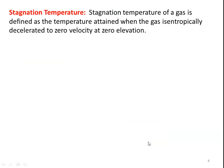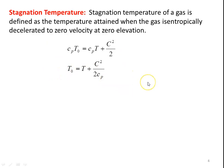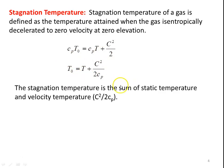Next is stagnation temperature. We have the stagnation enthalpy H0 = H + C²/2. For a perfect gas, H = Cp·T. So from the previous equation, H0 = Cp·T0 and H = Cp·T, giving T0 = T + C²/(2Cp). The stagnation temperature is the sum of static temperature and the velocity temperature, where C²/(2Cp) is called the velocity temperature.